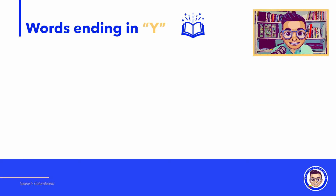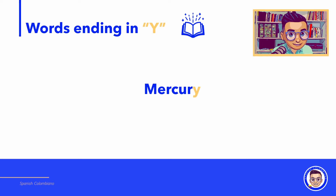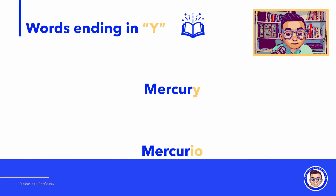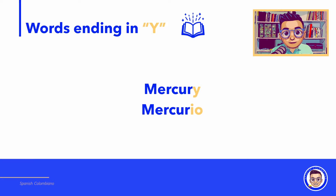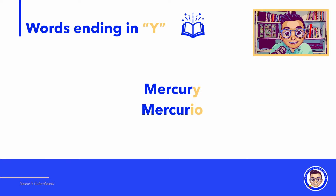How do you say mercury in Spanish? Mercury — just change the Y for IO and mercury becomes mercurio. So mercury in Spanish is mercurio and they have the same meaning.